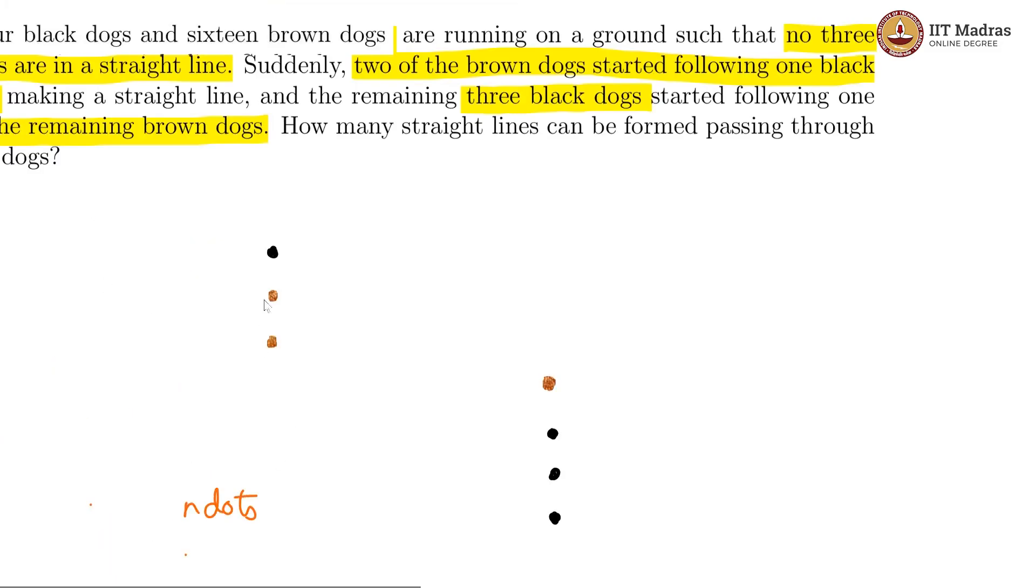However, in our problem, there are 20 dots, so in this case, each dot is a dog. But there are some collinear. So what we do is we will calculate the number of straight lines for all 20 when they are not collinear,